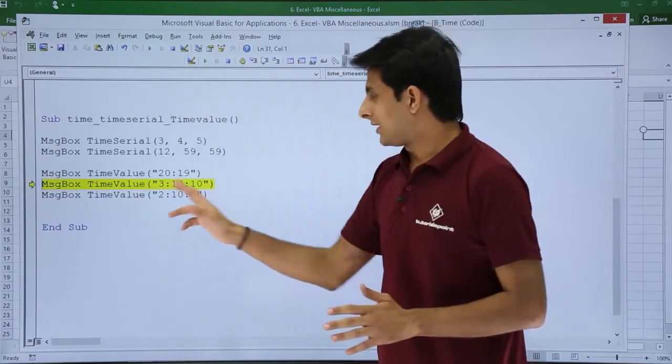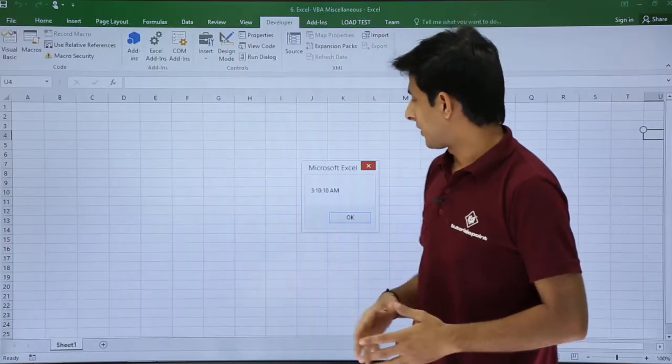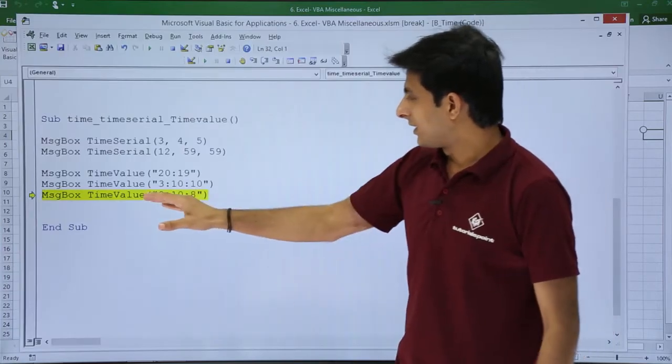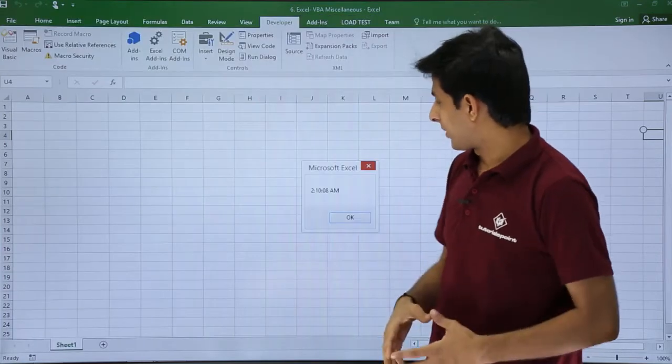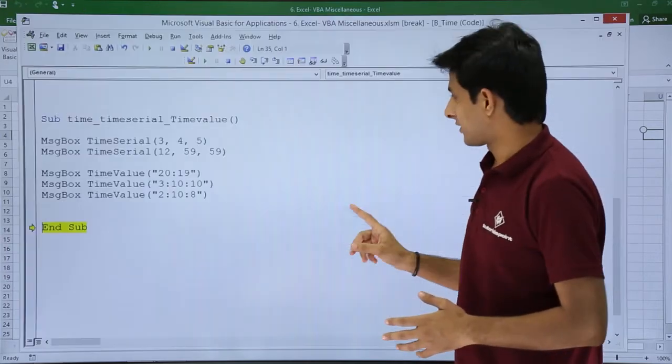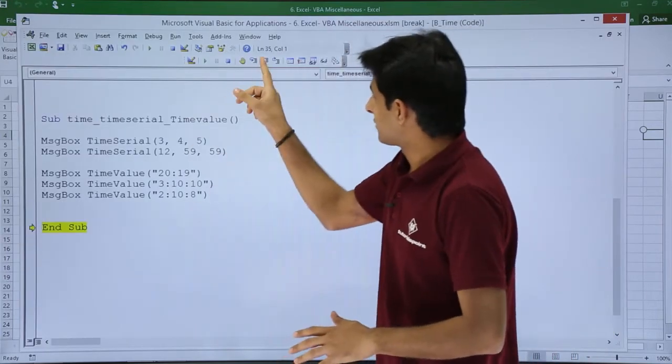Step Into - 3 hours 10 minutes 10 seconds and it is AM. Similarly the last one, if you see, I'll click on Step Into - 2 hours 10 minutes and 8 seconds, and they have given as AM itself. I'll just click OK and finally I'll just come out of this.